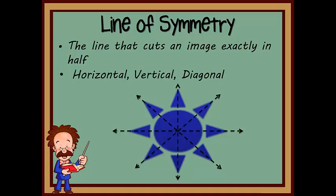Some objects only have one line of symmetry, either horizontally, vertically, or diagonally, while some have more than one. This image of a sun has many lines of symmetry, and it can be folded in many different ways to form two matching halves.